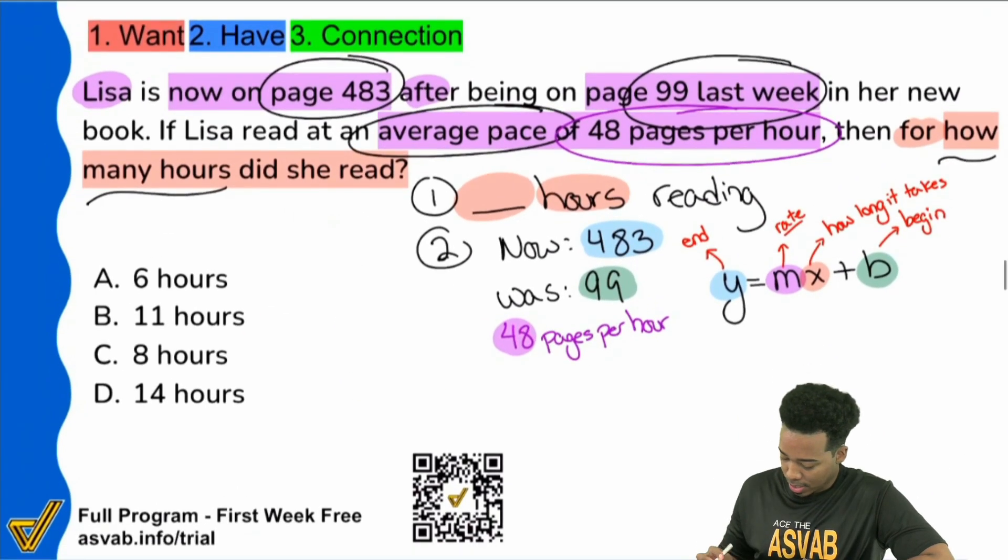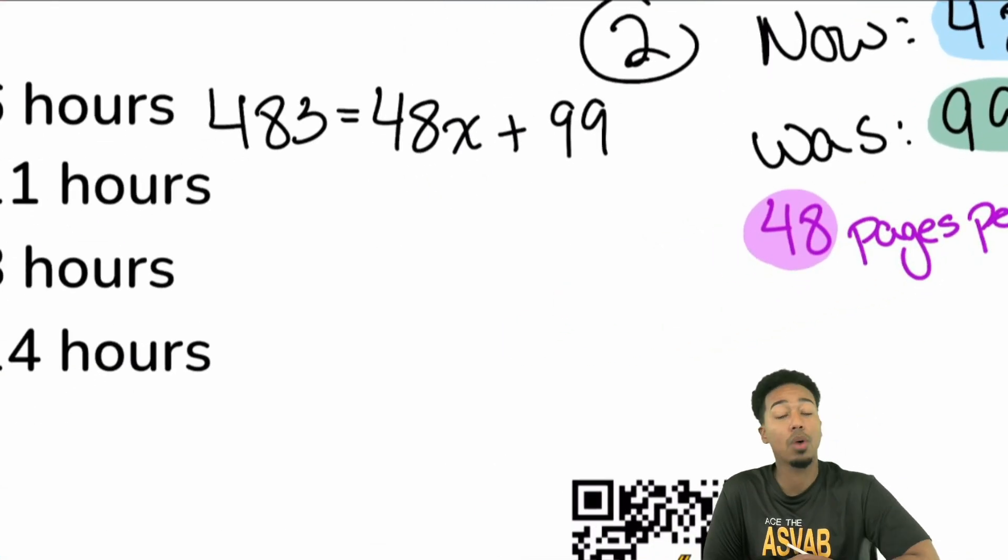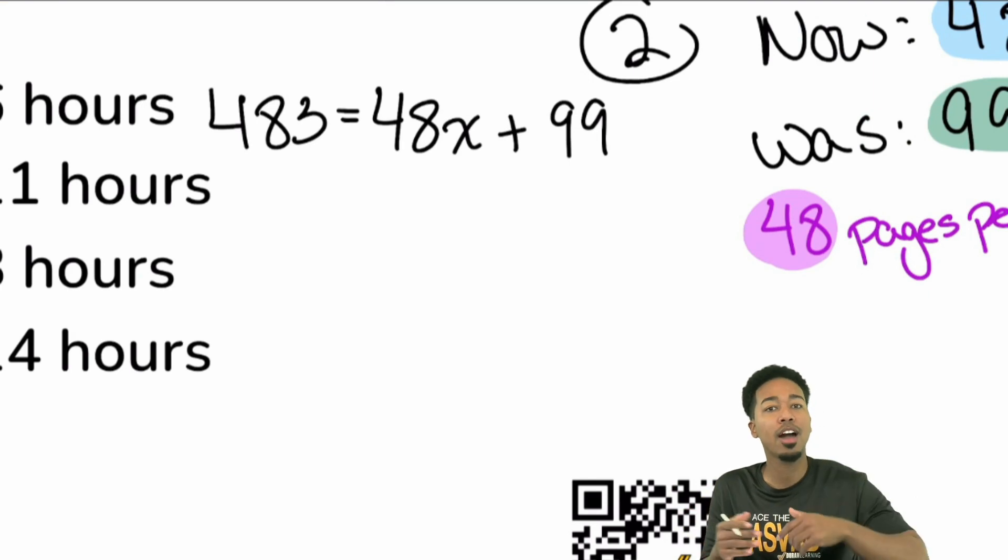Let's get into it. We are going to plug everything in. We had 483, that's where we are at now. We had 48 pages per hour. We don't know what x is because that's the number of hours. And then we began on page 99. So plus 99. Now what we're going to do is we're going to solve this equation and we're done. If you like the way that we're solving this or if you learned something, leave a comment so that more people can find our videos and we can continue making more.